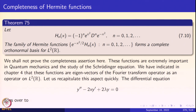The Hermite functions — Hermite polynomials H_n(x) multiplied by e^(−x²/2) — form a complete orthonormal basis for L2(ℝ), as stated in Theorem 75. The completeness assertion will be proved later. These functions are extremely important in quantum mechanics and the study of the Schrödinger operator, and multidimensional analogues appear throughout the literature. As indicated in Chapter 4, these are the eigenfunctions of the Fourier transform operator.